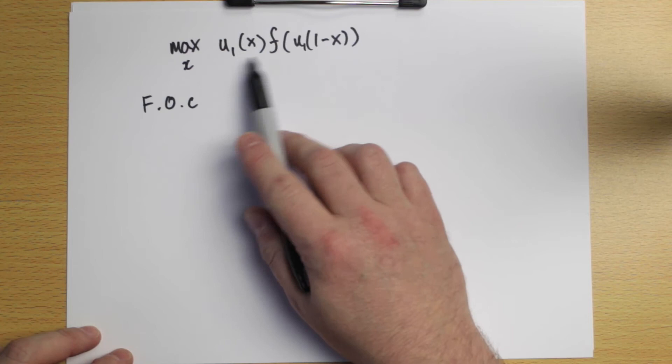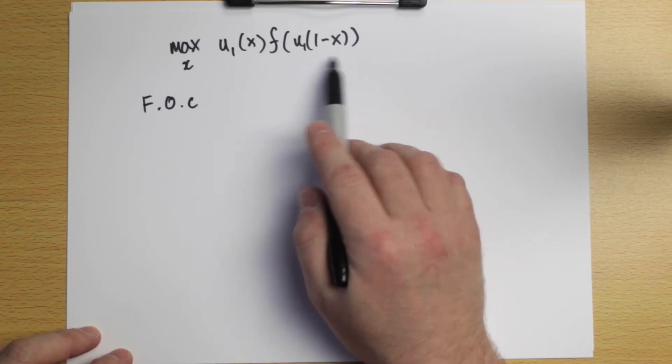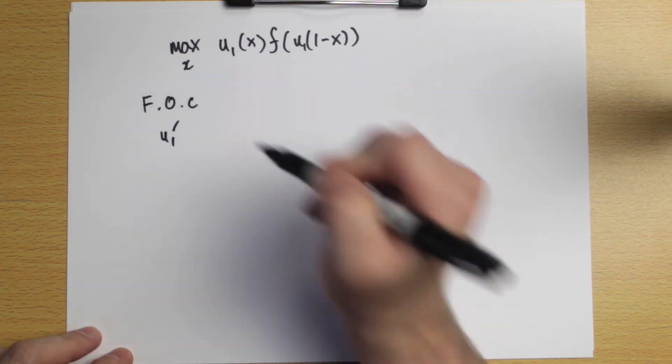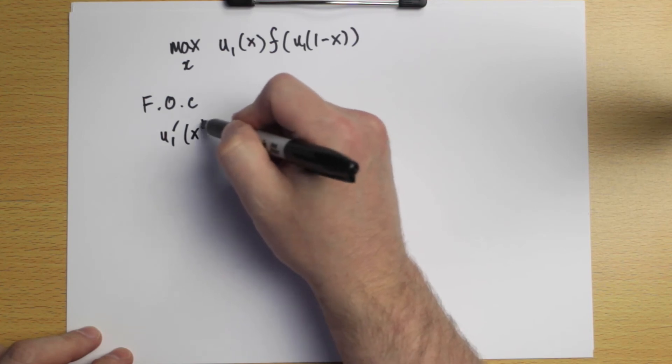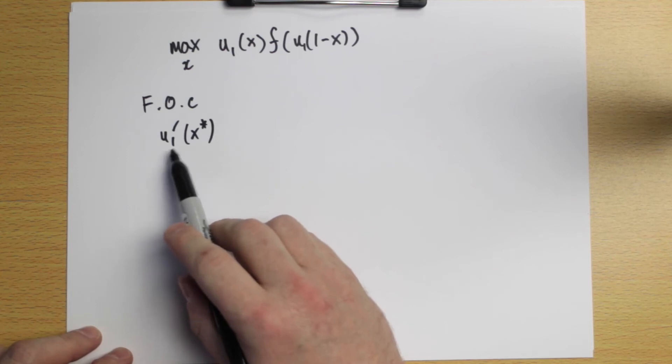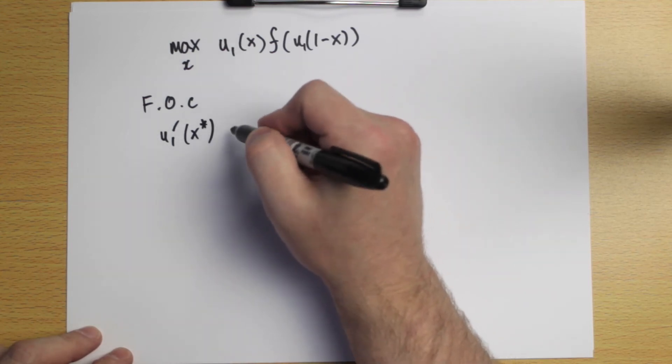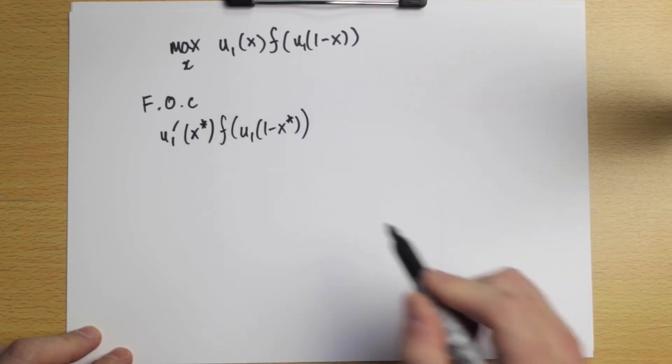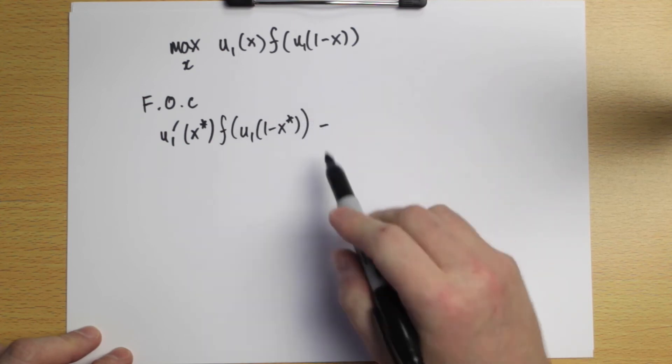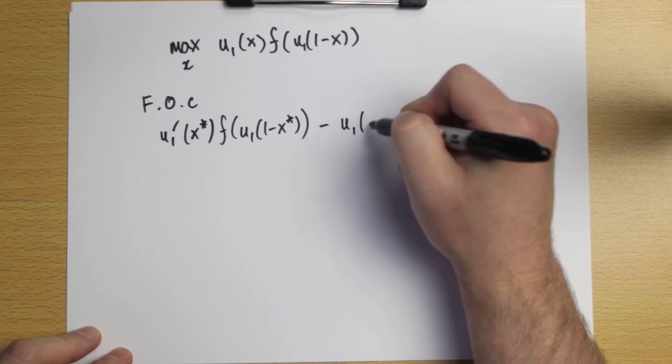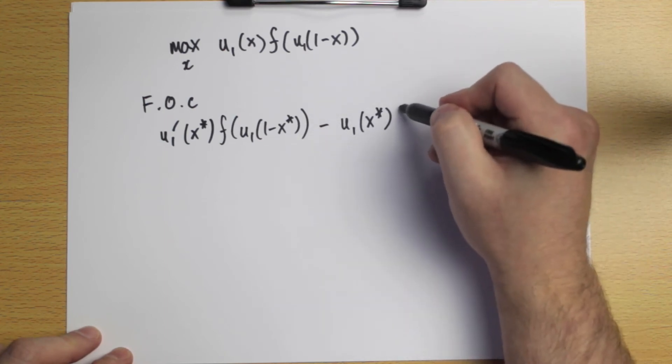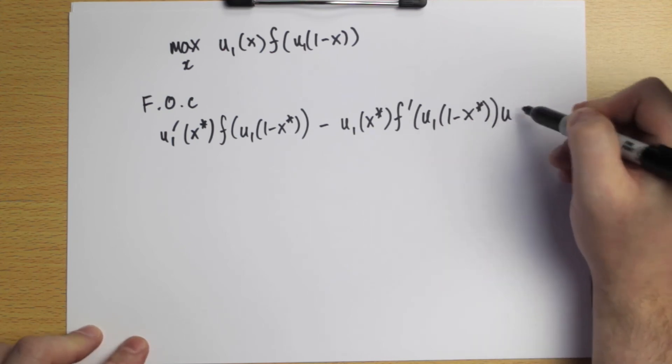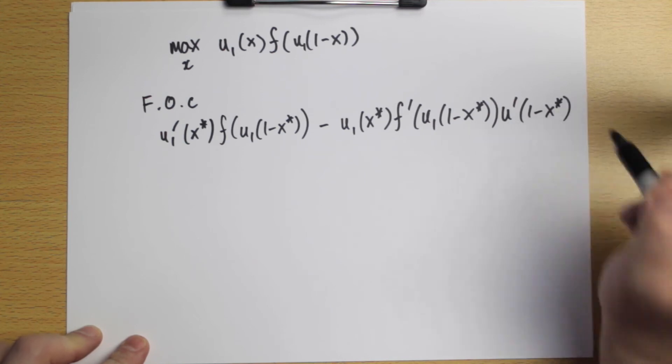There's a product here of two things. This function U1 of X is being multiplied by something else, and we've got a composition here, so we're going to need the product rule and the chain rule. So let me just write this out. I differentiate the first part, U1 prime for the derivative, and we're evaluating this at the optimal X. So U1, the derivative or the marginal utility at X star multiplied by this expression. And then I'm using the product rule, so I add, actually there's a minus, so I'll just leave the minus out. U1 of X star multiplied by F prime, U1, one minus X star, and multiplied by the marginal utility at one minus X star.